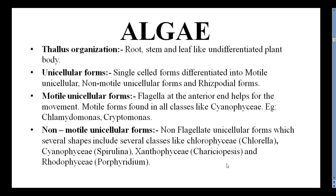Motile unicellular forms have flagella at the anterior end that help movement from one place to another. Motile forms are found in many classes, like Chlorophyceae — for example, Chlamydomonas and Cryptomonas are motile unicellular forms. Non-motile forms lack flagella. These include several shapes found in classes like Chlorophyceae (Chlorella), Cyanophyceae (Spirulina), Xanthophyceae (Carciopsis), and Rhodophyceae (Porphyridae).